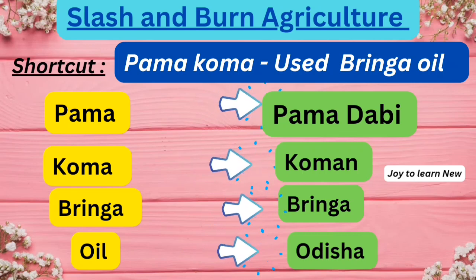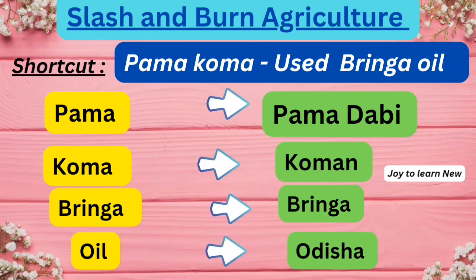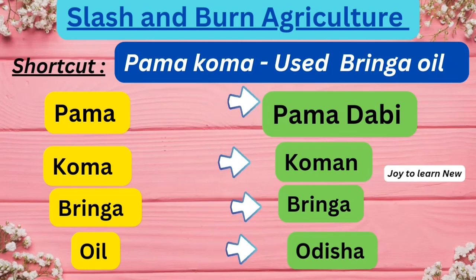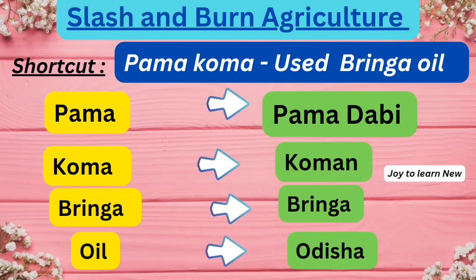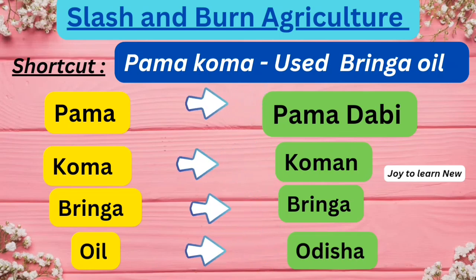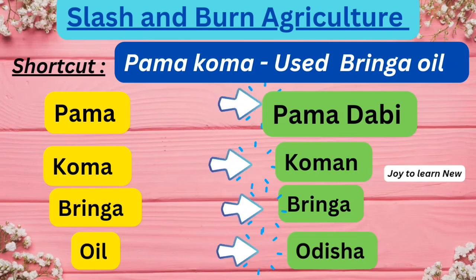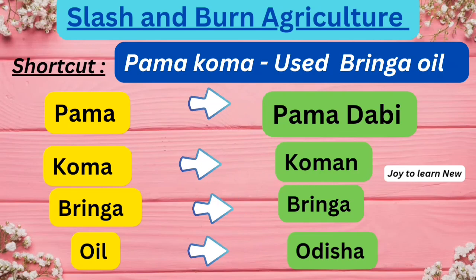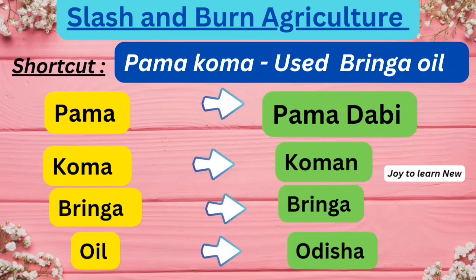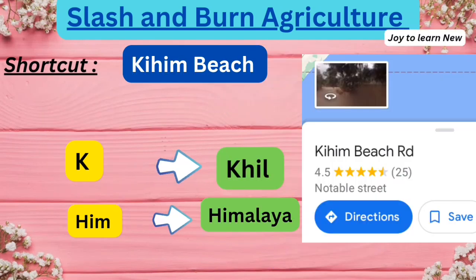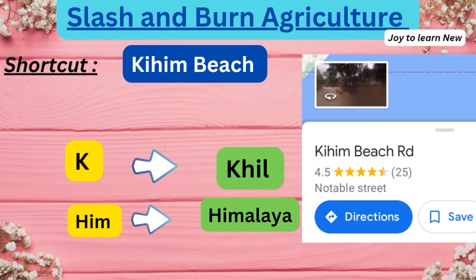The next shortcut is 'Bama went to koma, and for recovery they used Bringa oil.' Bama refers to Dabi, Koma refers to Koman, Bringa refers to Bringa, and Oil — O — stands for Odisha. So Dabi, Koman, and Bringa are names used in Odisha.